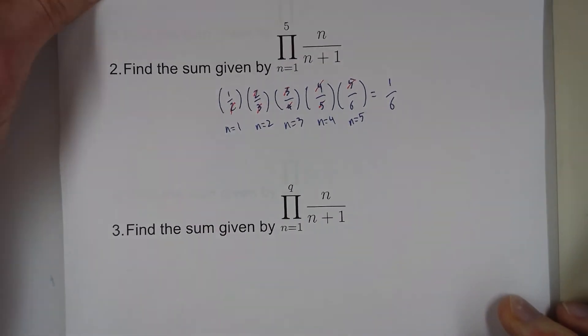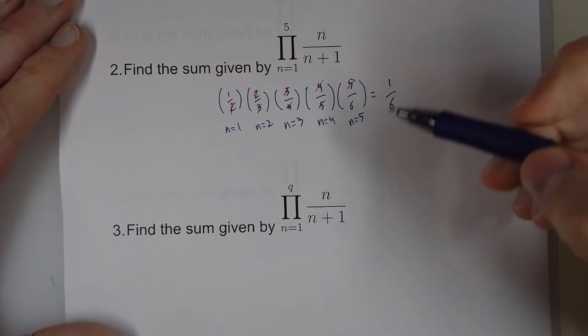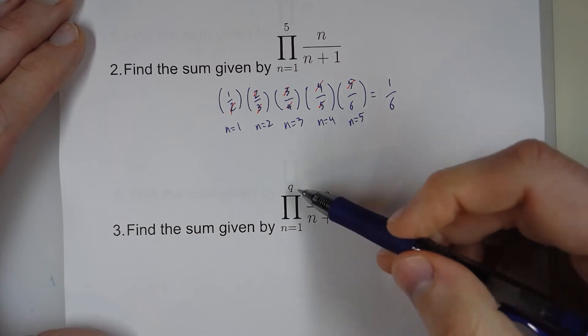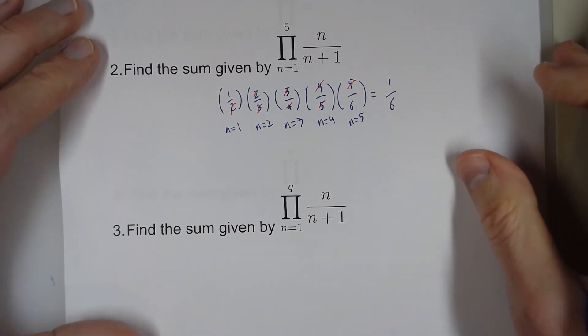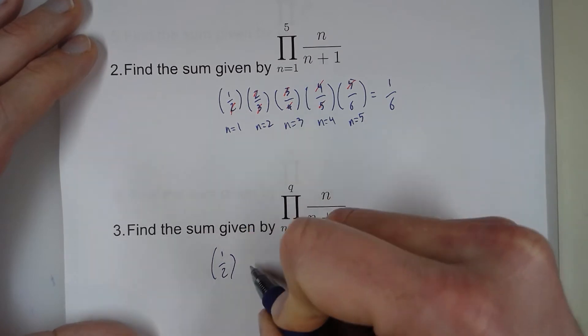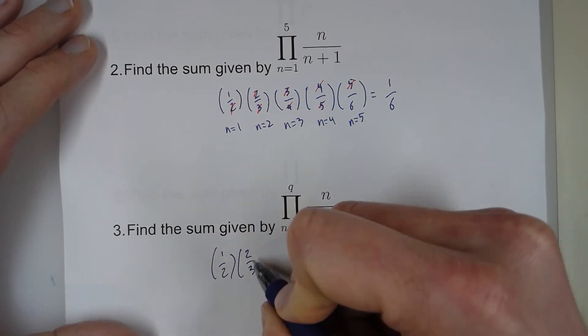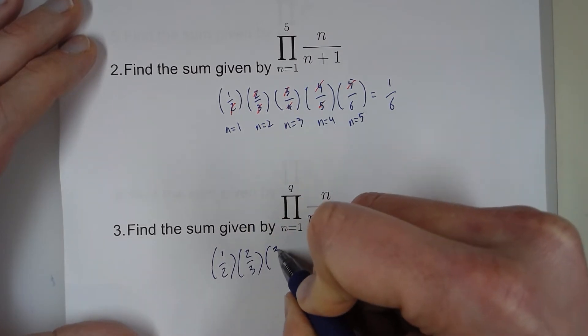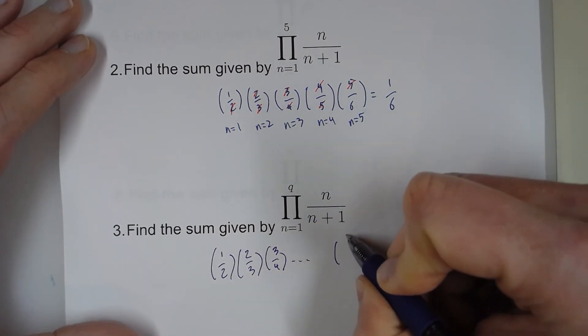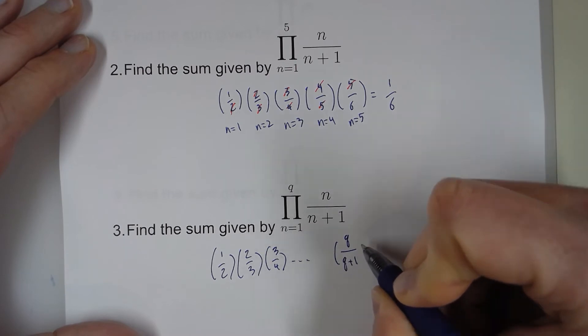Number 3 is very similar to number 2. The only difference is that we're going from 1 all the way up to q. So my first term would be 1 half, my second term would be 2 thirds, my next term would be 3 fourths, dot dot dot, but what would be the last term? It would be q over q plus 1.